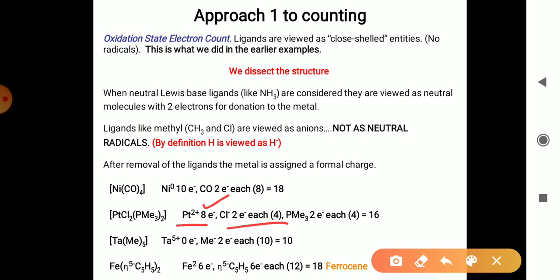And the PMe3 gives 2 electrons. So there is 8 plus 4 plus 4, so the total is 16. This complex doesn't follow the 18 electron rule.